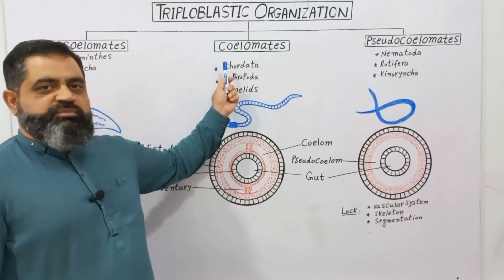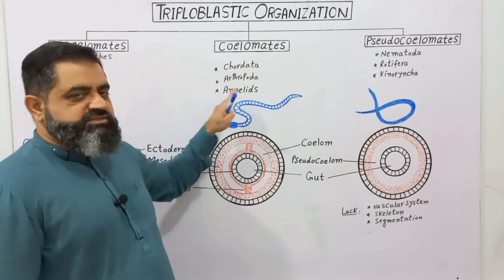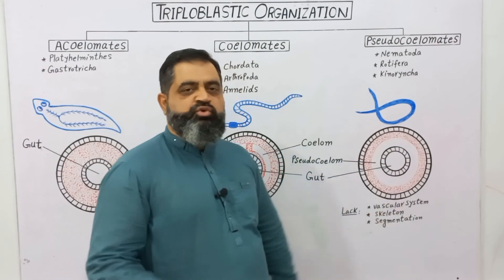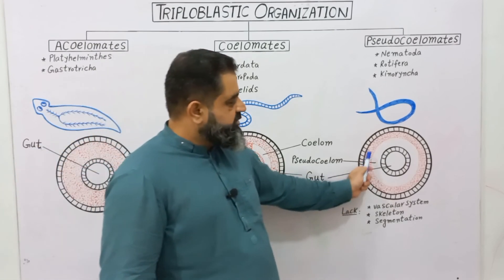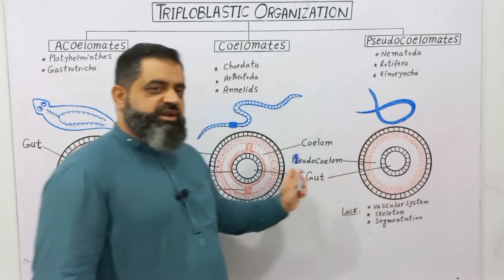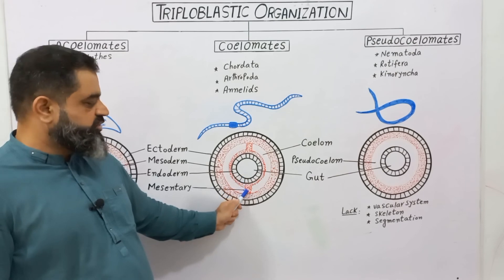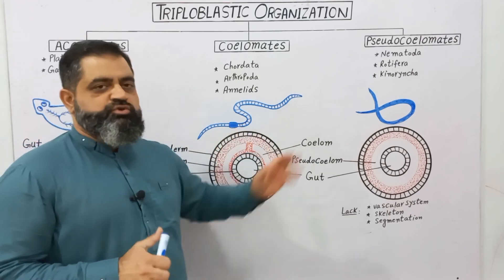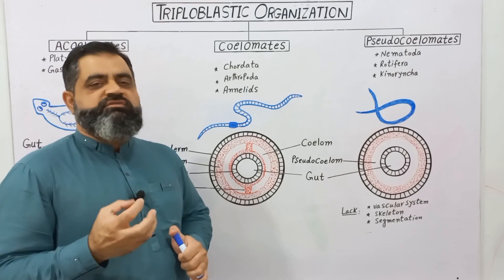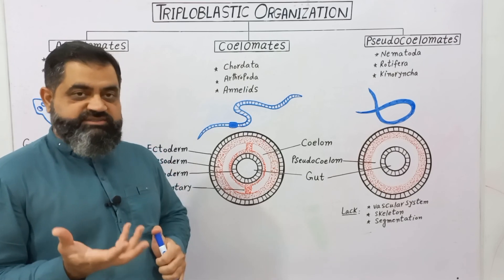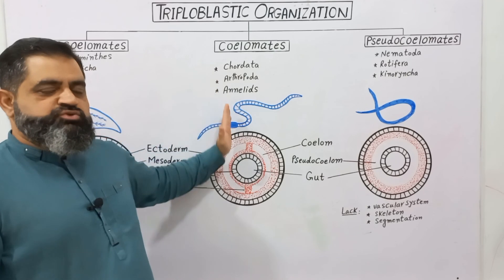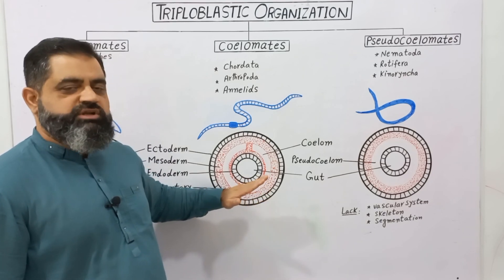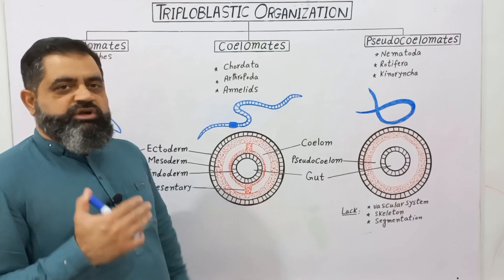Comparing coelomates and pseudocoelomates: in the true coelom, both parietal mesoderm and visceral mesoderm are present along with mesenteries, whereas in the pseudocoelom only parietal mesoderm is present and no visceral mesoderm. Both groups contain coelomic fluid in their body cavity, which gives the animals proper shape and provides hydrostatic skeleton. Coelomates typically possess most organ systems including digestive, muscular, and excretory systems; upper phyla also have a skeleton and segmented body.